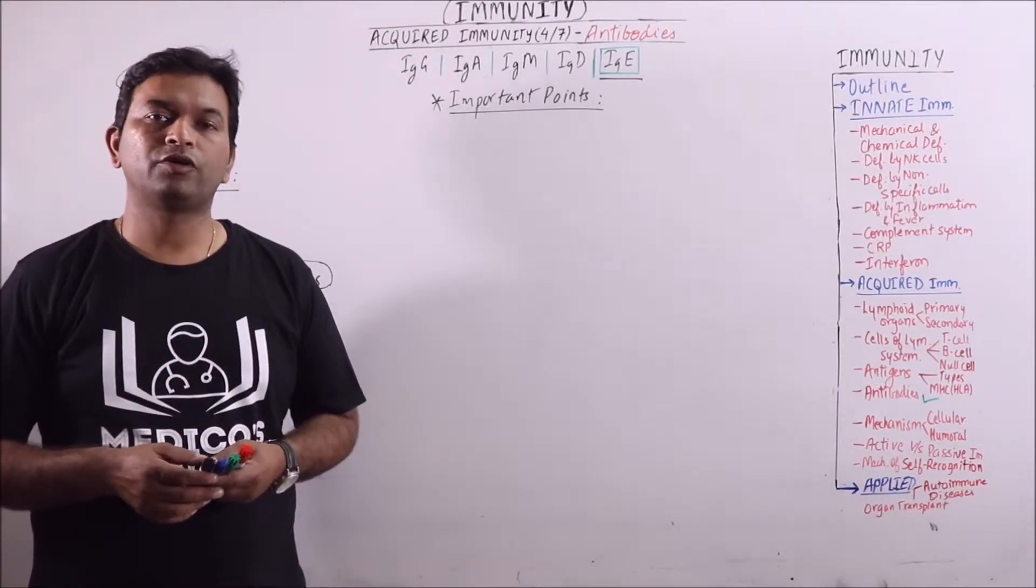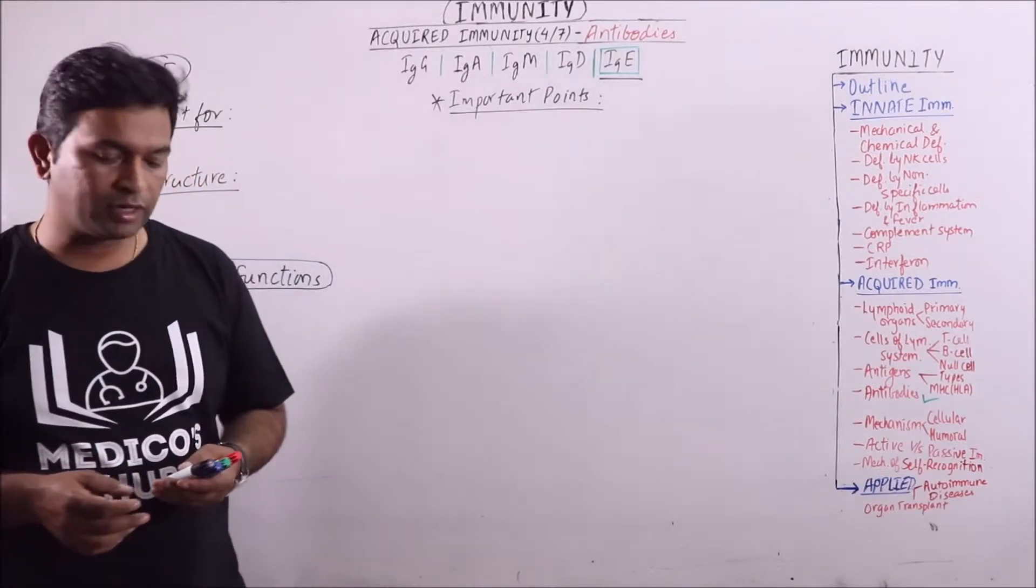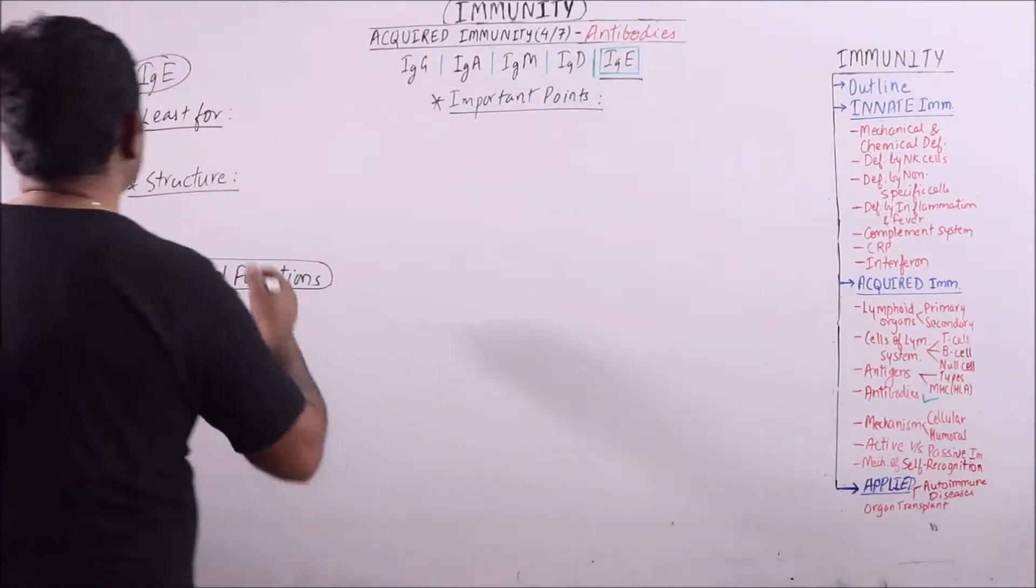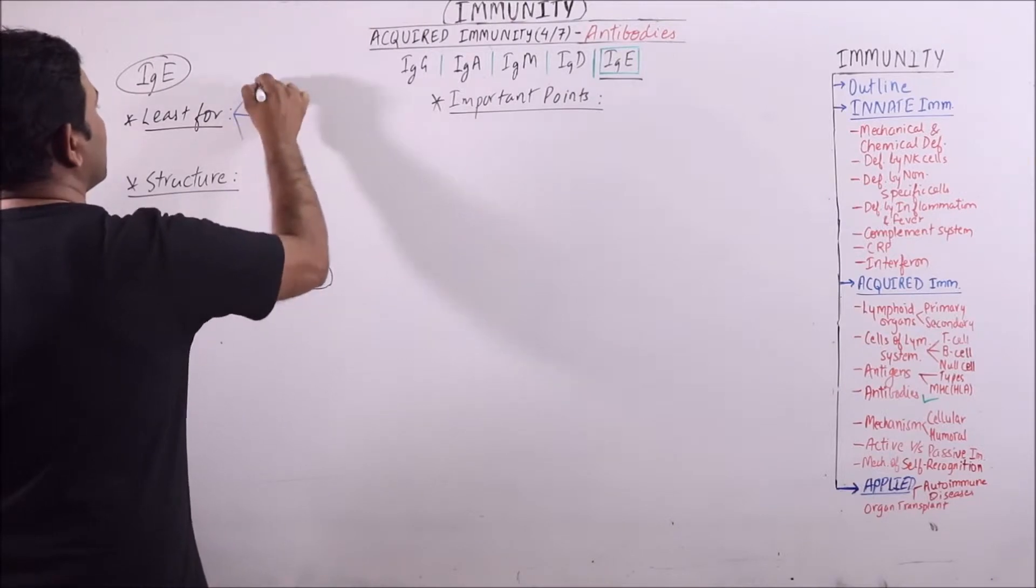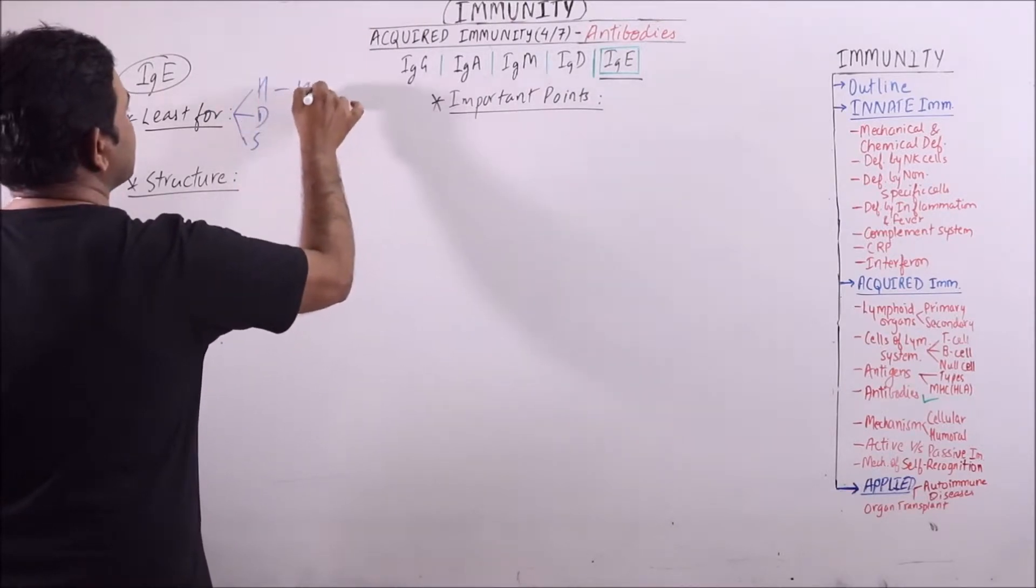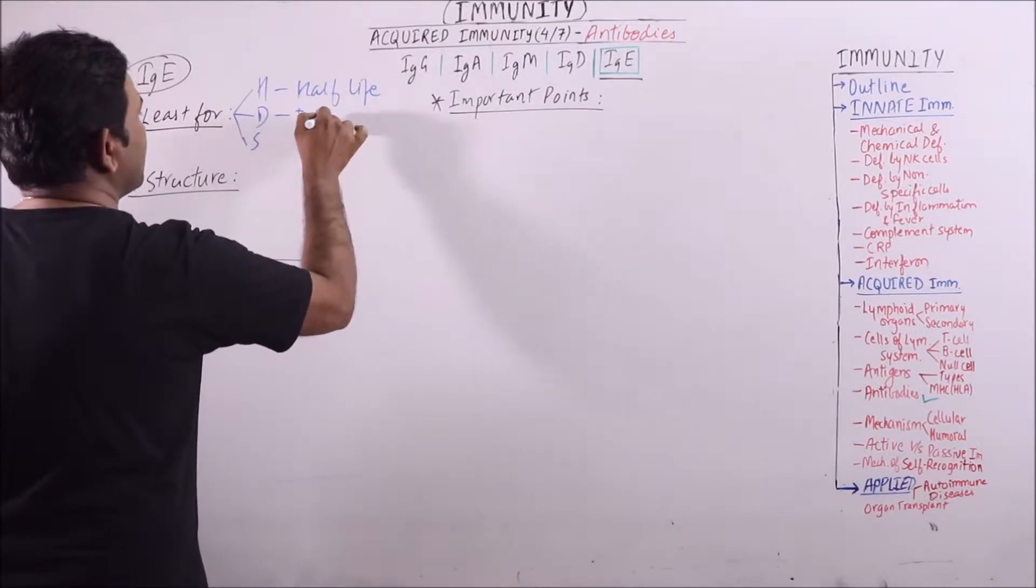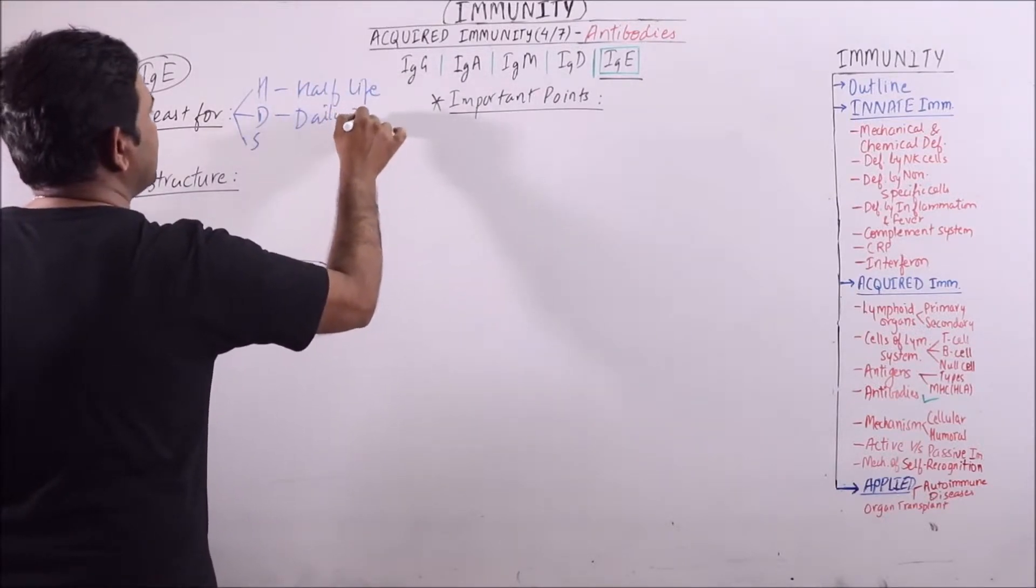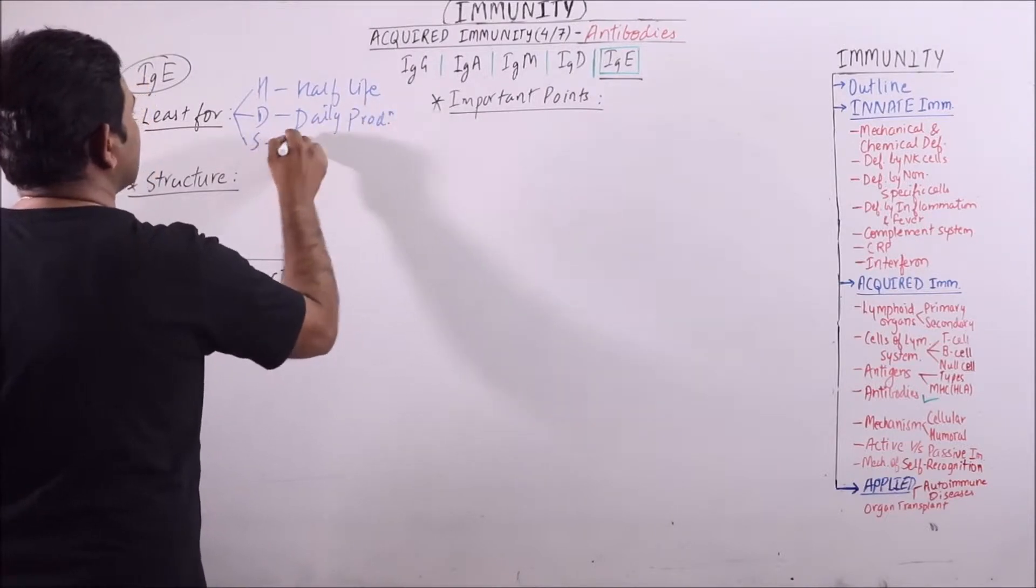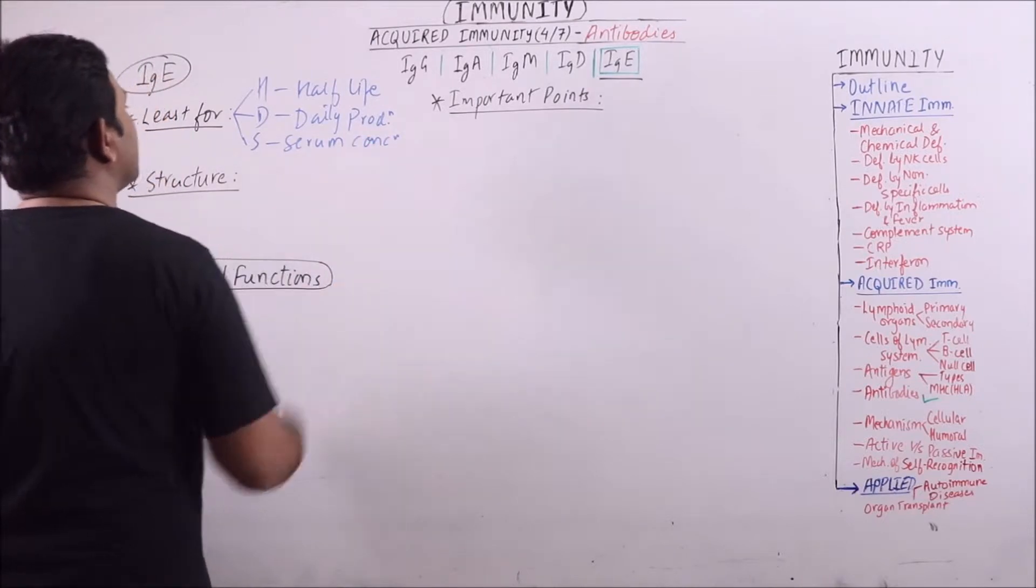Hello friends, I am Dr. Prashanth Sharma and you are watching MediCoast Hub. In this video, I am going to discuss Immunoglobulin E. Immunoglobulin E is least for H, D, and S. H means half-life, D means daily production, and S for serum concentration. So it is minimum for all these.